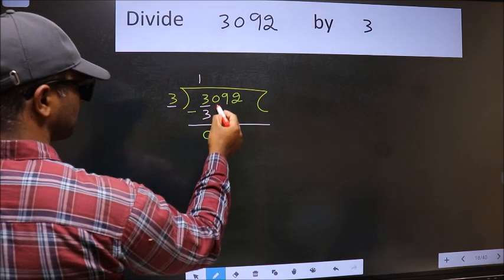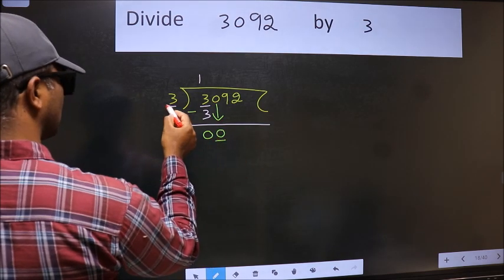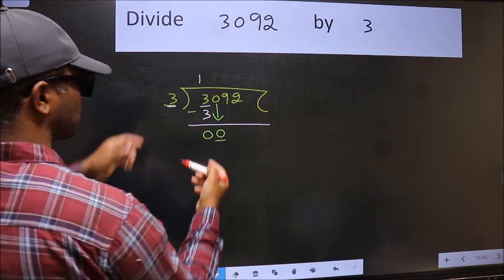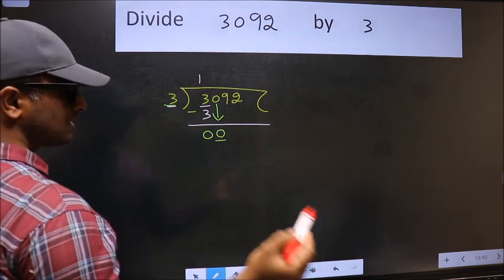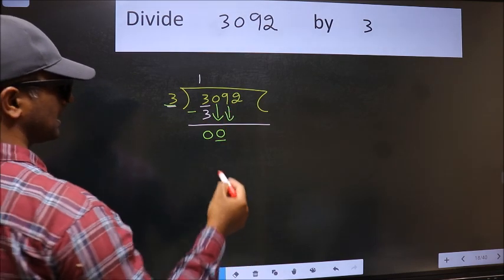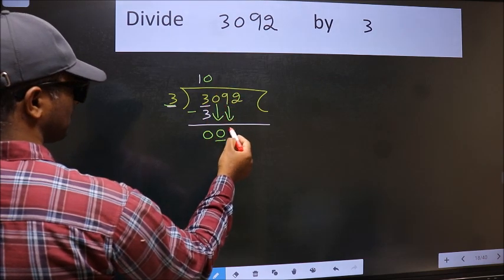After this, bring down the beside number, so 0 down. Now here we have 0 and here 3. 0 is smaller than 3, so we should bring down the second number. And the rule to bring down the second number is we should put 0 here. Then only we can bring this number down.